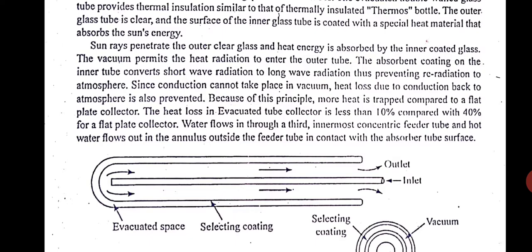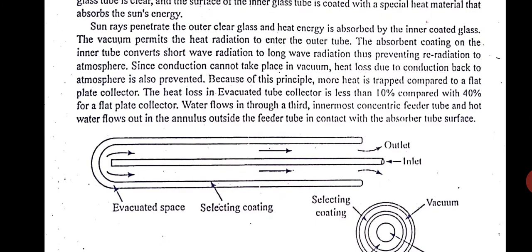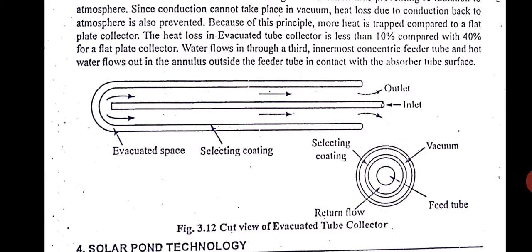The cross section, if you just see the cross section you'll have a better idea. There are two tubes here, concentric tubes. This is a cut section. Inside in the center there is a feed tube. Outside in the annulus you have got two tubes. The outermost tube is a plain glass tube, and the inside tube, concentric tube, is again a glass tube but it has got a selective coating. Because of this selective coating heat is trapped.